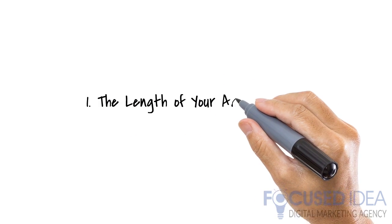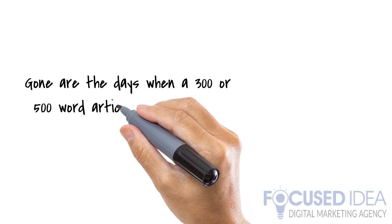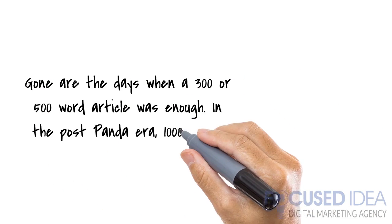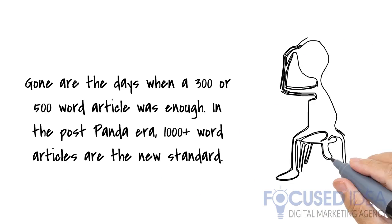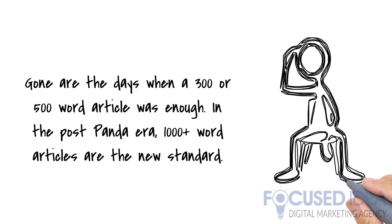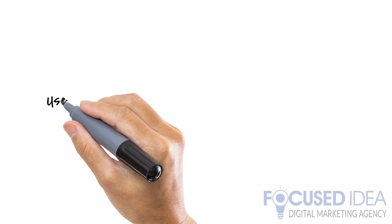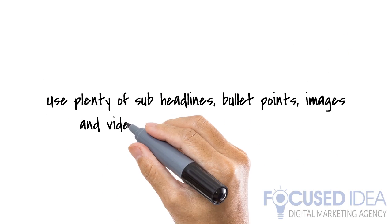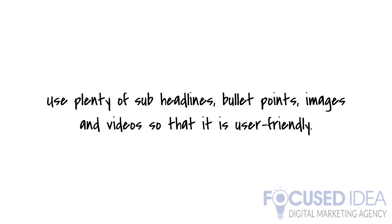1. The Length of Your Articles. Gone are the days when a 300 or 500 word article was enough. In the post-Panda era, 1,000 word plus articles are the new standard. Make your content interesting and readable with plenty of sub-headlines, bullet points, images, and video so that it is user-friendly.